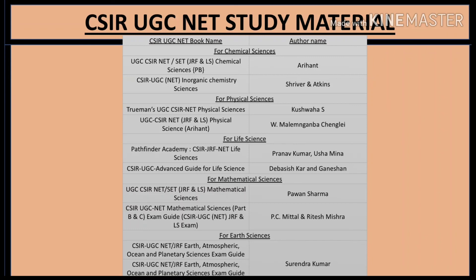Now let's talk about study materials and recommended books. For Chemical Sciences: NET/SET JRF and LS Chemical Science by Arahan, and UGC NET Inorganic Chemistry Sciences. Shriver and Atkins is recommended for physical sciences. For Life Sciences: Pathfinder Academy and Advanced Guide for Life Sciences by Pranav Kumar and Meena. For Mathematical Sciences, books by Pavan Sharma and PC Mittal and Ritesh Mishra are recommended. For Earth Sciences, books by Surendra Kumar are available.